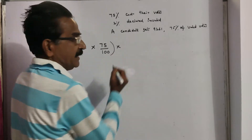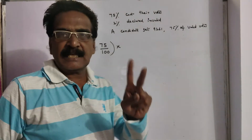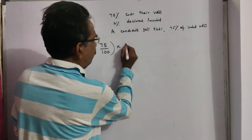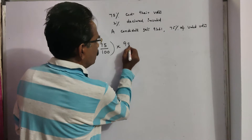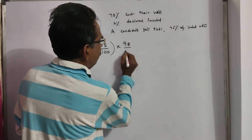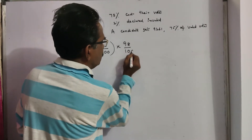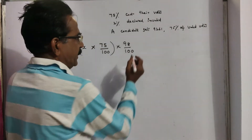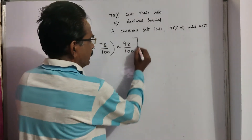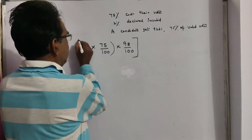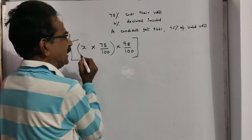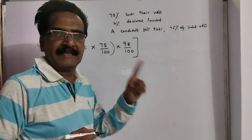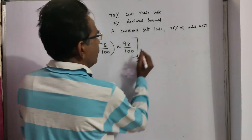And 2% of the votes were declared invalid. So the number of valid votes is 98% of the poll votes, since 2% were declared invalid, leaving 98% valid votes.